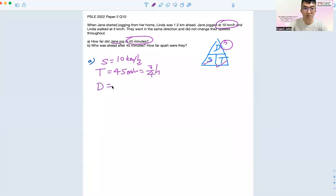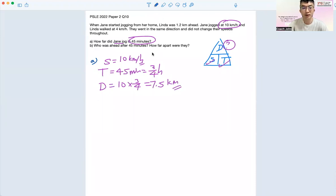So for the distance, after you look at this DST triangle, it's speed times time, and then using a calculator, you'll get 7.5 km. All right, so moving on for part B. A is quite straightforward compared to normal school papers.